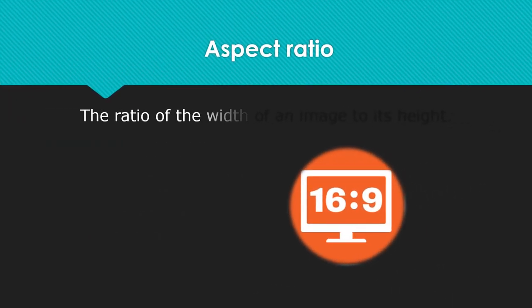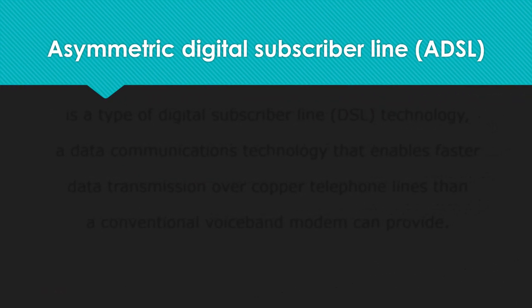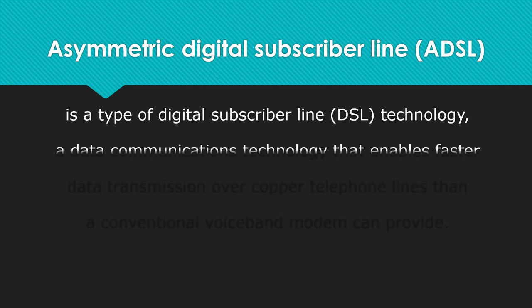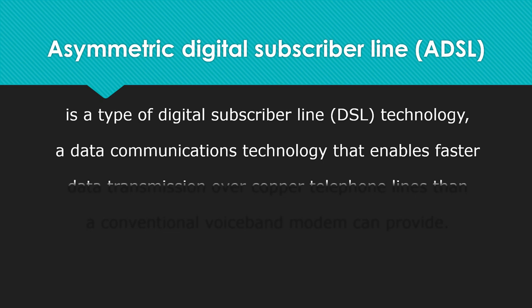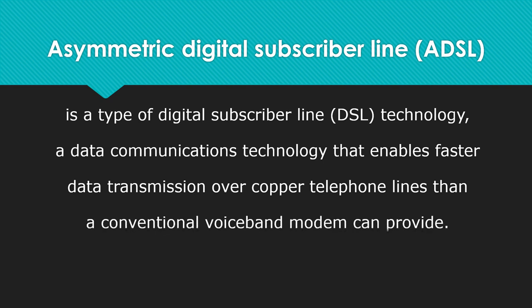Aspect ratio is the ratio of the width of an image to its height. Asymmetric digital subscriber line (ADSL) is a type of digital subscriber line (DSL) technology — a data communications technology that enables faster data transmission over copper telephone lines than a conventional voice band modem can provide.